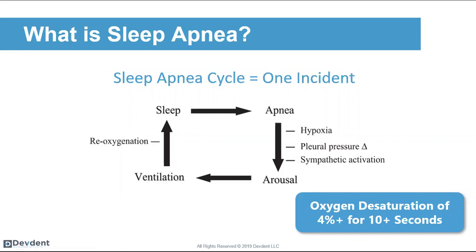This is the cycle of sleep apnea. We go to sleep and then we go into an apneic state — our body is not getting proper oxygen. Our airway is blocked or disrupted, we go into a hypopneic or apneic state, and we're not breathing. Oxygen starts to desaturate. The body says 'wake up or you're going to die.' That's called an arousal. Then we re-breathe and the cycle repeats. Each one of those events is called one sleep apnea incident or cycle.